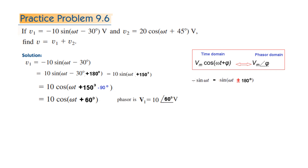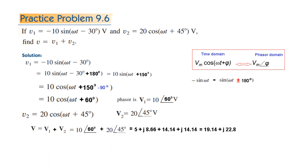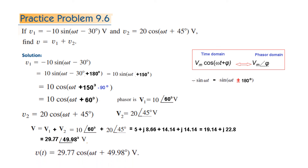V2 is already in cosine form, so we just pick the values: phasor V2 is 20∠45°. For the summation, convert both phasors to rectangular form, add the real parts and imaginary parts, then convert the result back to polar form. From the polar form we can write the time-domain answer: v = 29.77·cos(ωt + angle).